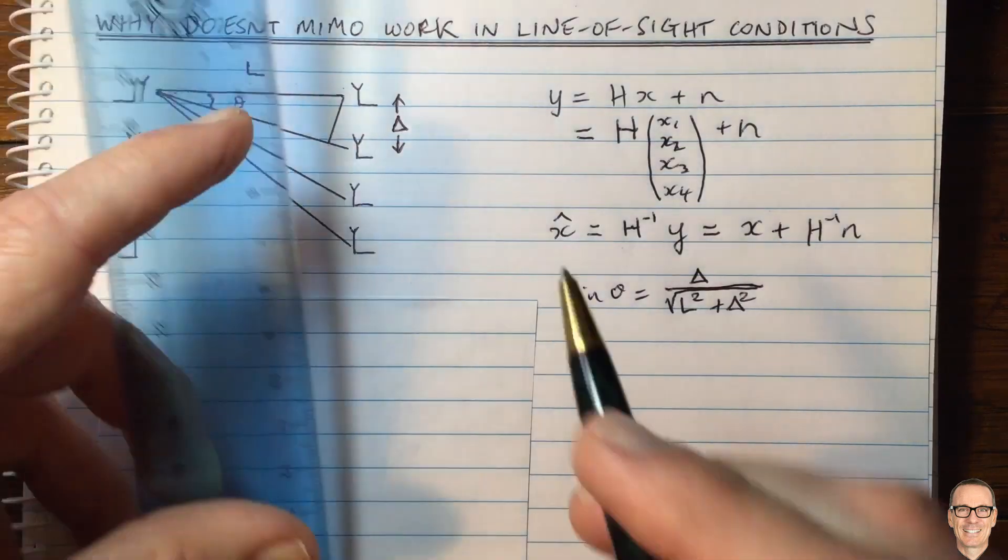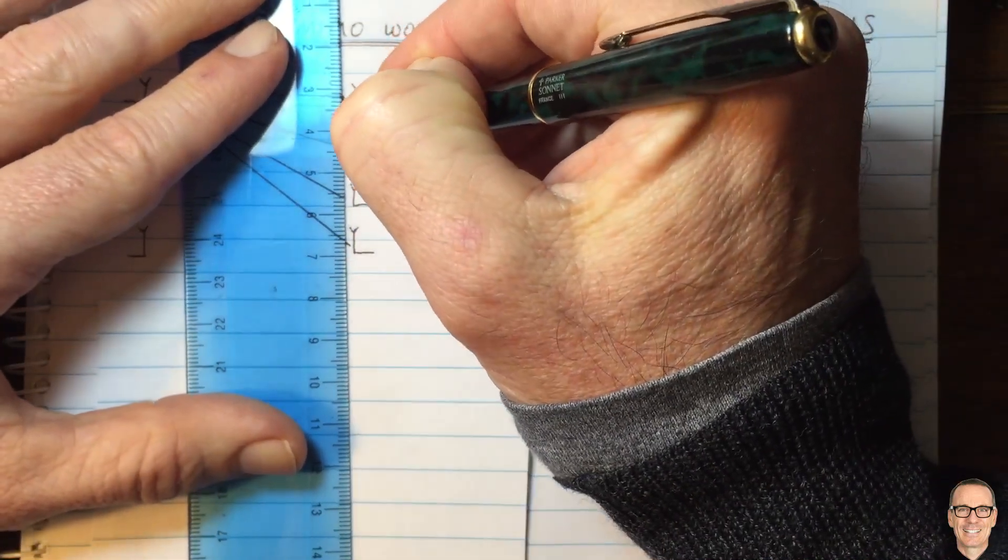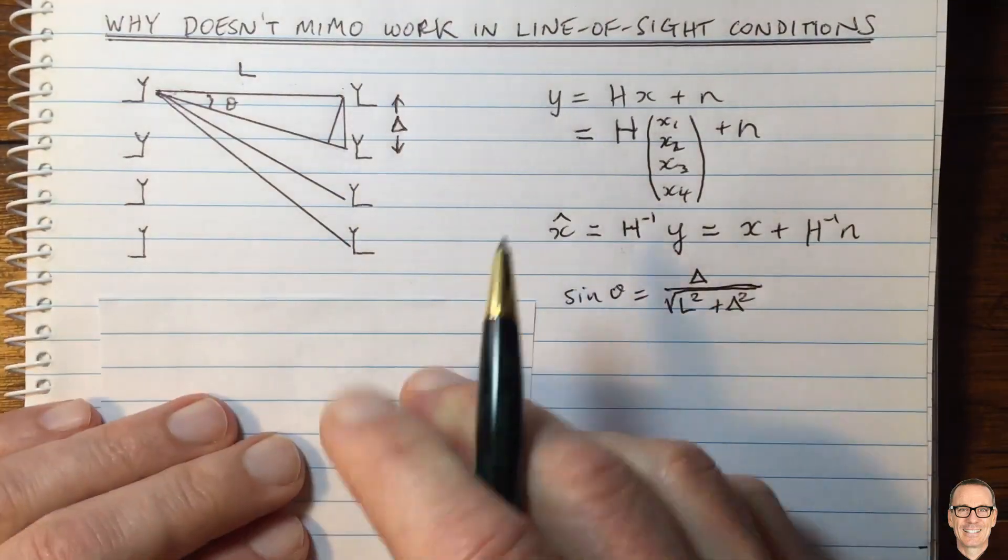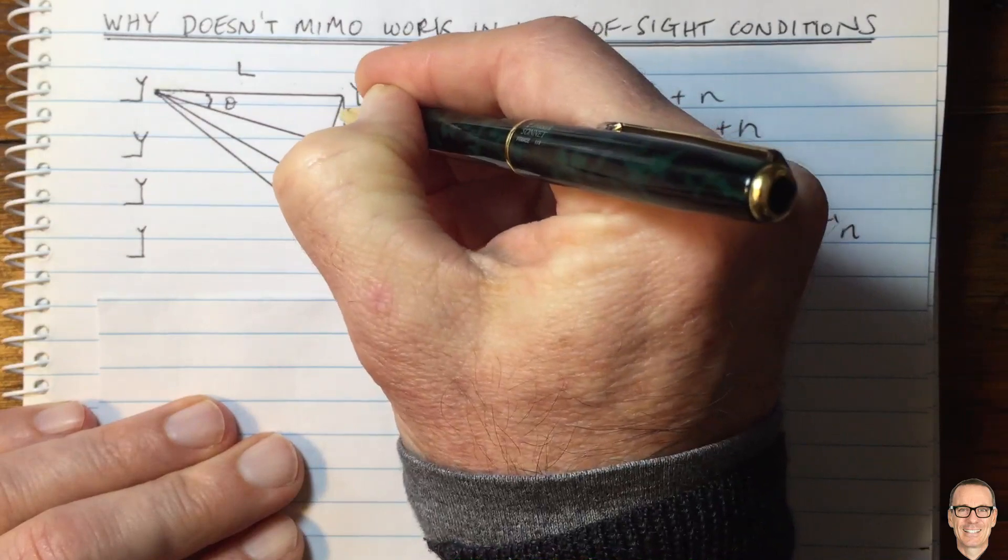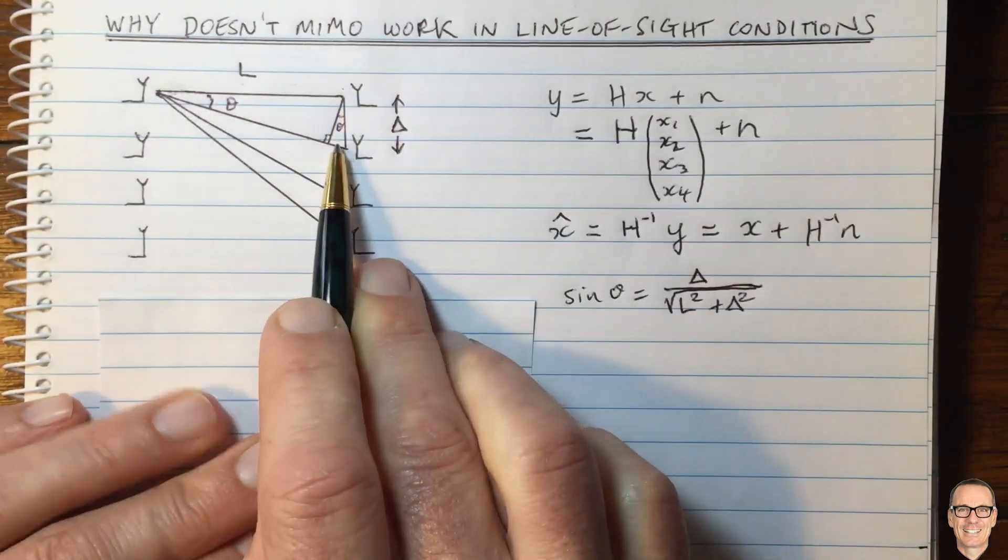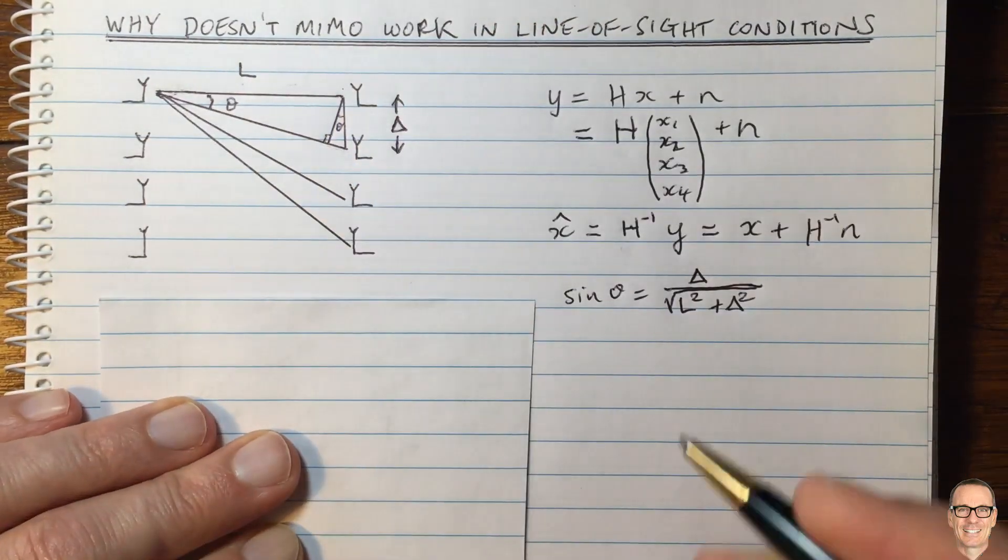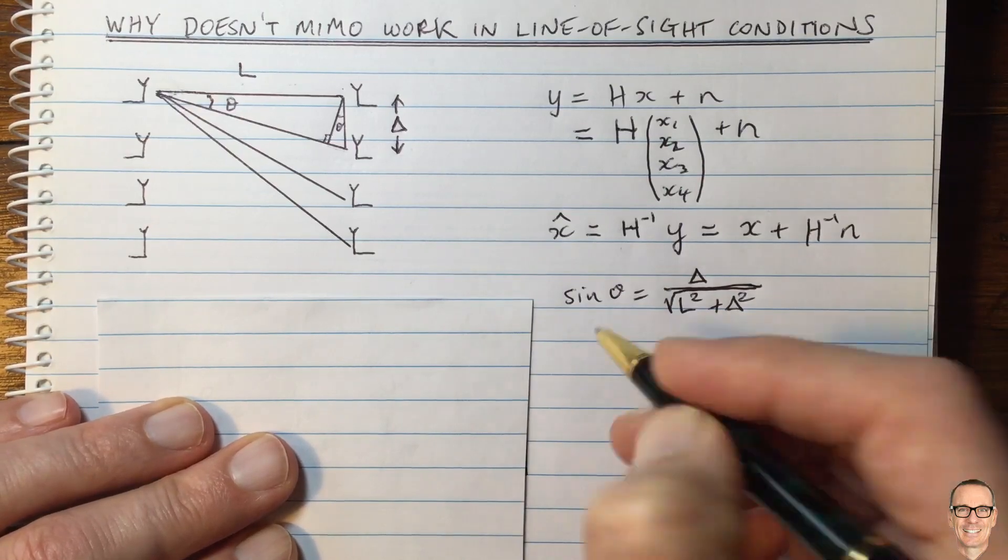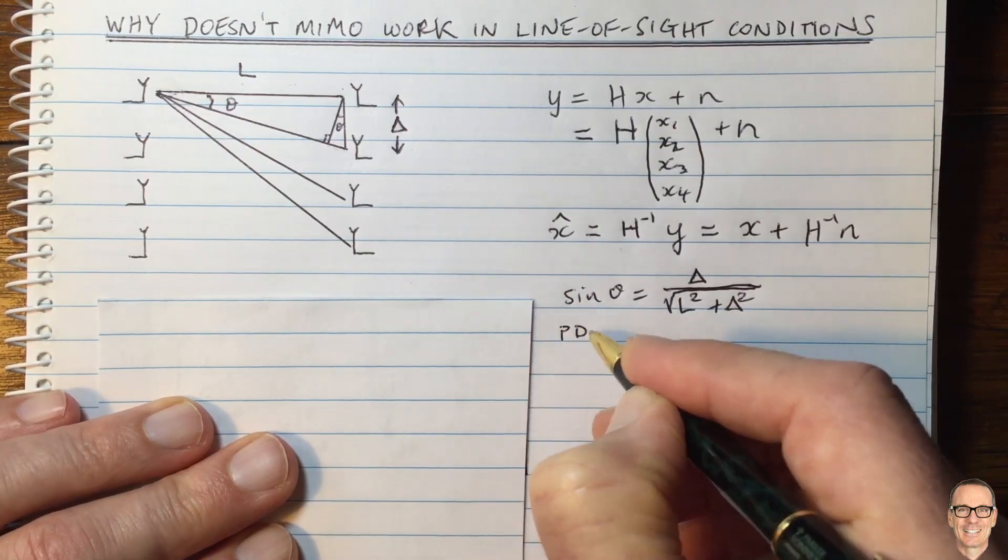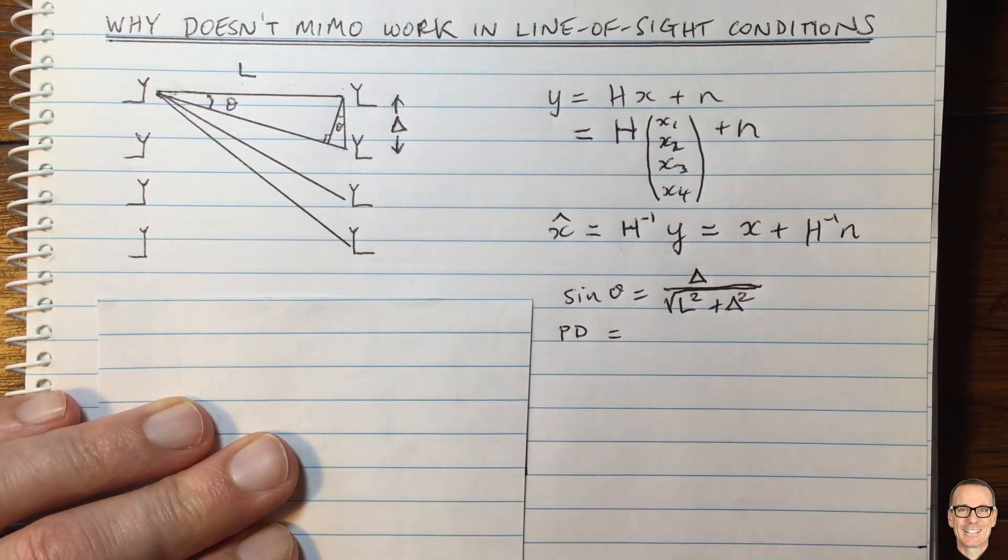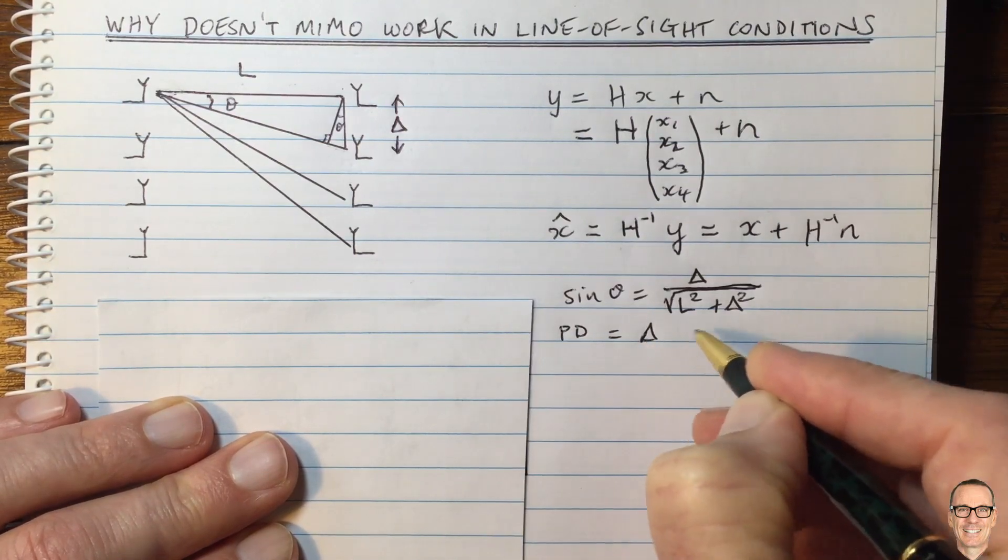Now we can think about this path difference. The difference between this path and this path, the length of that, is going to be given by, from similar triangles, we can draw a triangle, and this path difference can be given by delta times sine of theta.